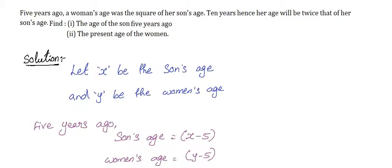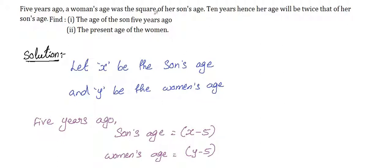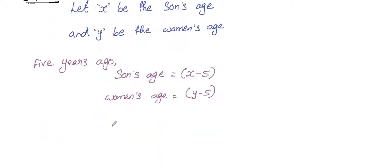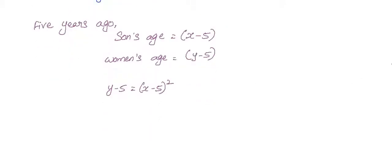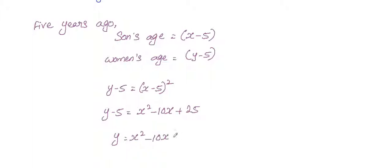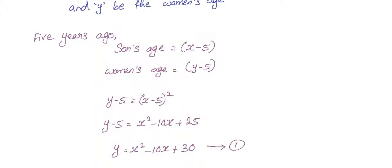Given that 5 years ago the woman's age was the square of her son's age, we can write the equation as: y minus 5 equals x minus 5, whole squared. Expanding, x minus 5 squared gives x squared minus 10x plus 25, so y equals x squared minus 10x plus 30. Let's call this Equation 1.